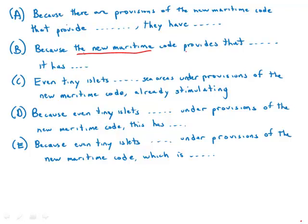So in B, we have the verb form provides. In C, D, and E, we have provisions. In A, oh, I love this. In A, we have there are provisions that provide.